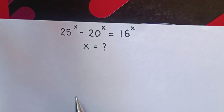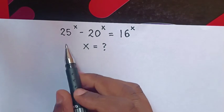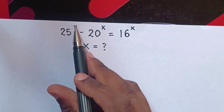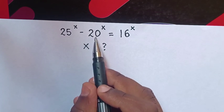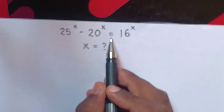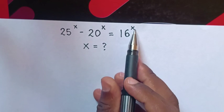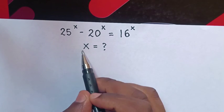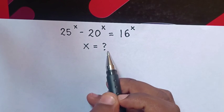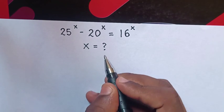Hello, how to solve this equation: 25 power x minus 20 power x is equal to 16 power x, to find the value of x.